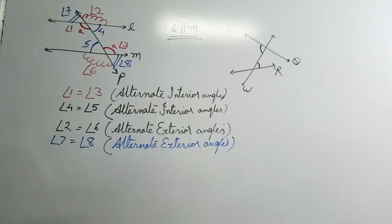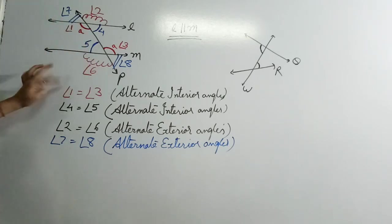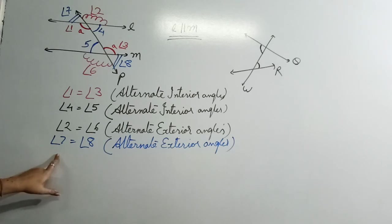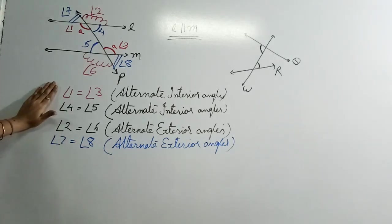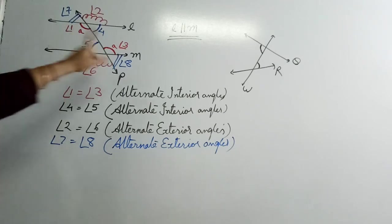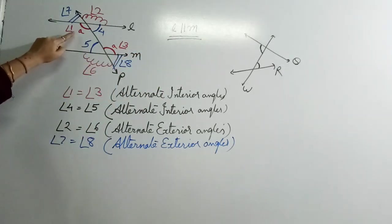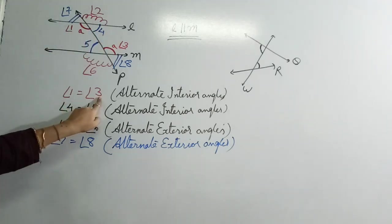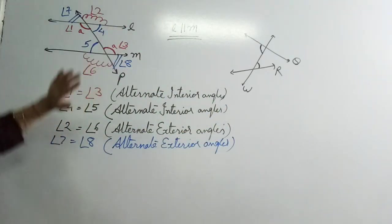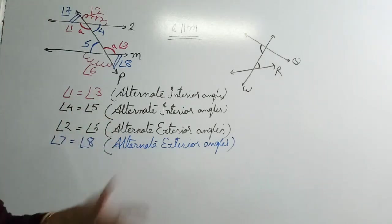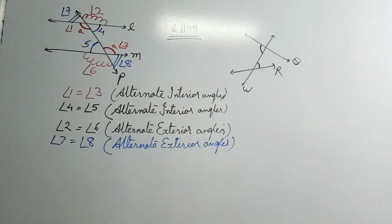हम यह property use करेंगे — अगर हमें दो lines को parallel prove करना हो, तो हम alternate interior angles को equal proof कर दें, या alternate exterior angles को equal proof कर दें, and you can say: since alternate exterior angles are equal, the lines are parallel. इसके opposite भी use होगा — अगर question में दिया हो कि lines parallel हैं और angle 1 की value 30 degree है, तो angle 3 भी 30 degree होगा, because alternate interior angles are equal when lines are parallel. उनको बार-बार draw करके समझ के याद करना. अब हम एक दूसरे type के angles पढ़ेंगे.